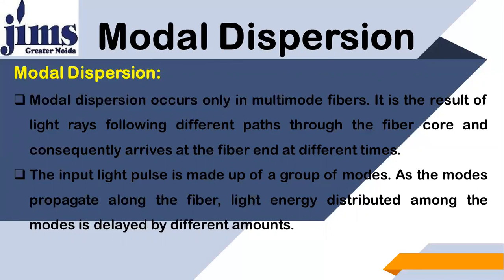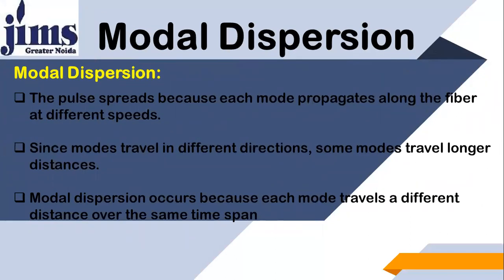Each mode has its own energy level, and because different modes have traveled different distances with the same velocity, their arriving times are different — meaning there is a delay in the energy as well. The pulse spreads because each mode propagates along the fiber at different speeds, and since modes travel in different directions, some modes travel a longer distance. Modal dispersion occurs because each mode travels a different distance over the same time span.